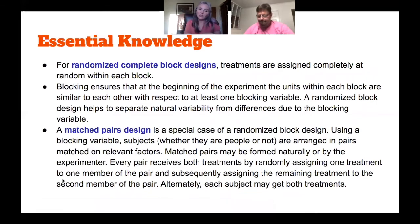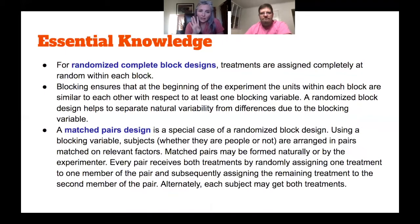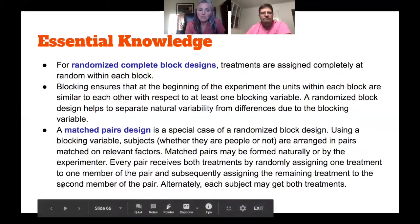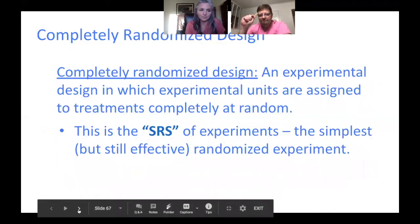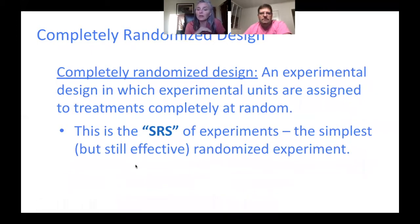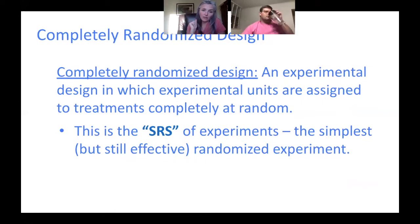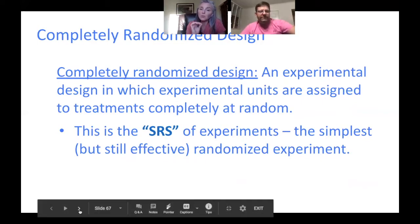When we start looking at our designs, we're going to look at a block design and a matched pairs design. It would behoove you to hit pause and make sure you have these two designs on paper. A completely randomized design — which we call a simple random sample — is the simplest of all designs: I take my sample, assign everyone a number, pull numbers from a hat or random number generator without replacement, and that's your completely randomized design.